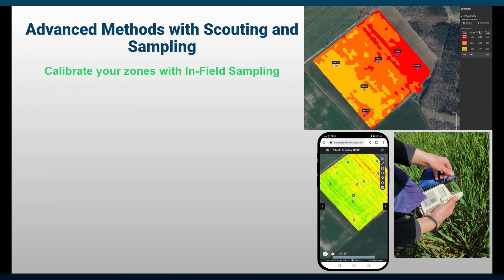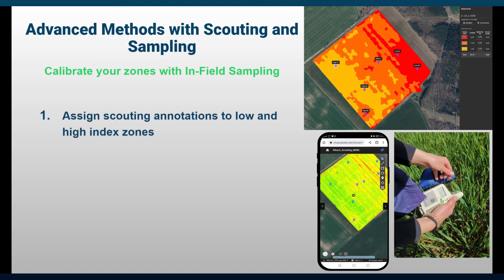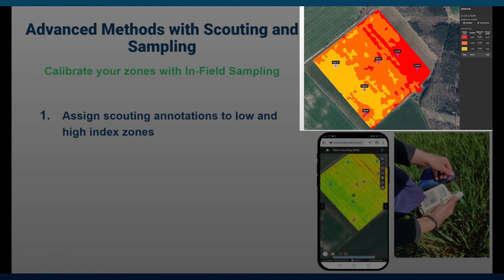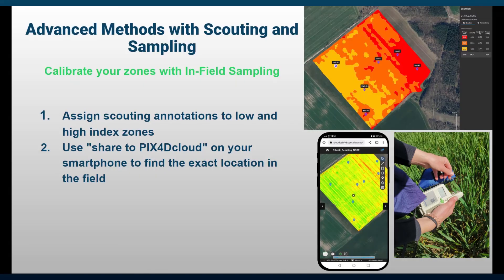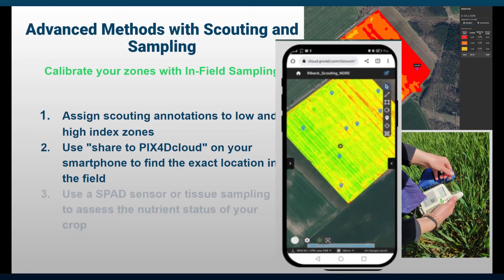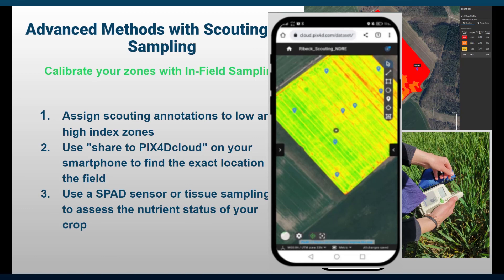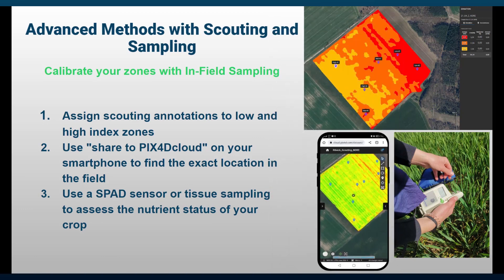Finally, I want to mention an advanced method where you can actually save inputs instead of just redistributing them. To do that, you would designate scouting annotations in the zonation for sampling with either an N-sensor or tissue sampling. Via the built-in share-to-cloud function of Pix4D Fields, you can transfer those annotations to your smartphone to find the exact location for sampling in the field. With the sampling results, you would know the exact amounts to apply in every zone according to the need of your crop.